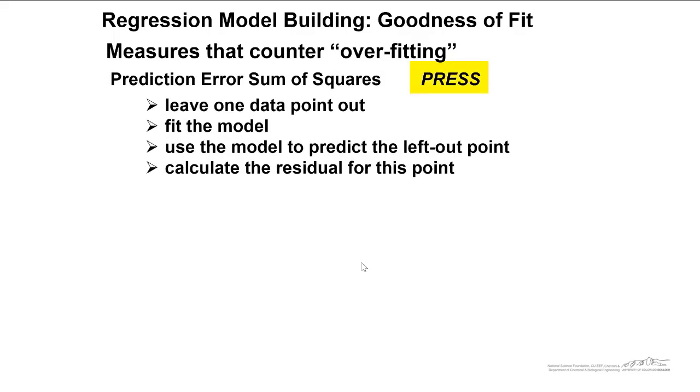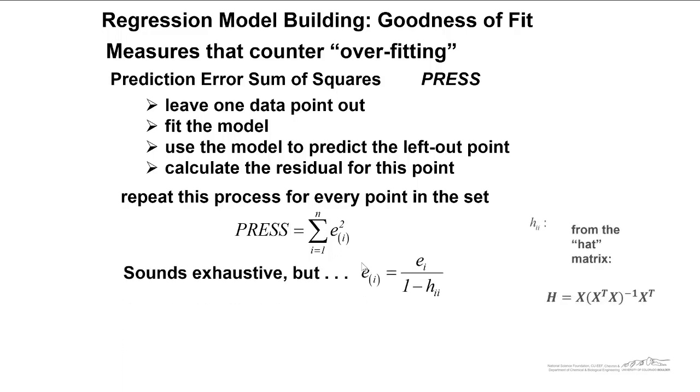There's also something known as prediction error sum of squares. You leave one data point out. You fit the model. Then you use the model to predict the left out point, and you calculate the residual for this point. We write this as the sum squared of E squared with I in parentheses. This HII term is from the hat matrix. I'm not going to show you an example of this, but it's not too difficult to determine H, your hat matrix, using this equation here. So if you needed to, you could just extract the II diagonal component from the hat matrix, and then you could use that to calculate the press.